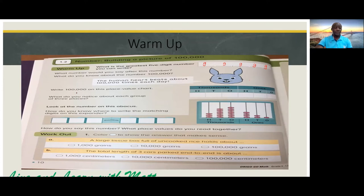So now let's write one hundred thousand on this place value chart. What number is it going to be here? It's going to be one hundred thousand — zero thousands. So we're going to write it as shown on the screen: one hundred thousand.